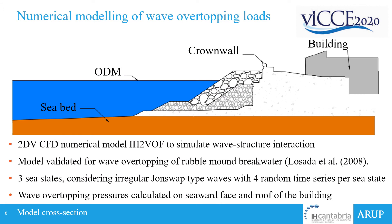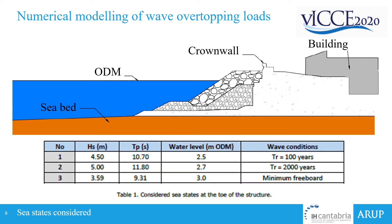For the numerical modelling, we approached IH Cantabria, who carried out a 2D CFD numerical model to simulate the wave-structure interaction based on the cross-section we had provided, shown on screen. This is a model validated for wave overtopping of rubble mound breakwaters. We used three sea states considering irregular JONSWAP-type waves with four random time series per sea state, and we were looking for the wave overtopping pressures calculated on the seaward face and the roof of the building. The sea states represented the two design conditions just discussed, as well as a reduced wave height and wave period for a minimum freeboard case.